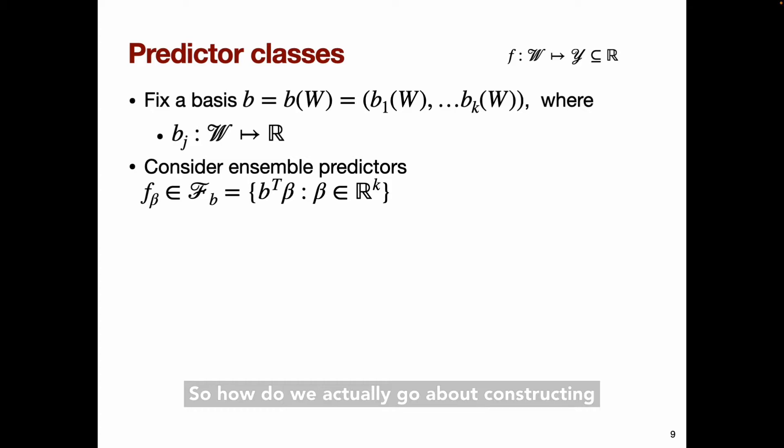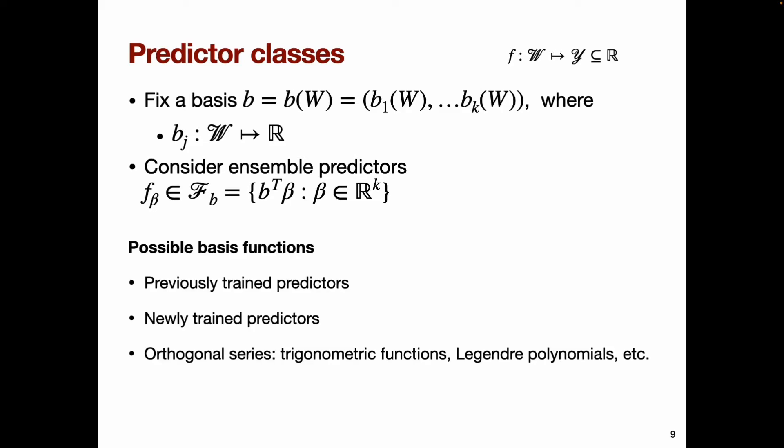So how do we actually go about constructing our predictors? Our approach involves first fixing some set of K basis functions that each map from the covariate space to the real line. The class of predictors that we'll consider is then just the span of those basis functions. In the ensemble learning literature, these are often called aggregated or stacked predictors.